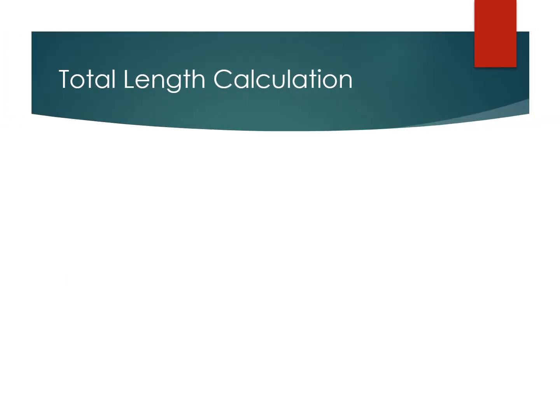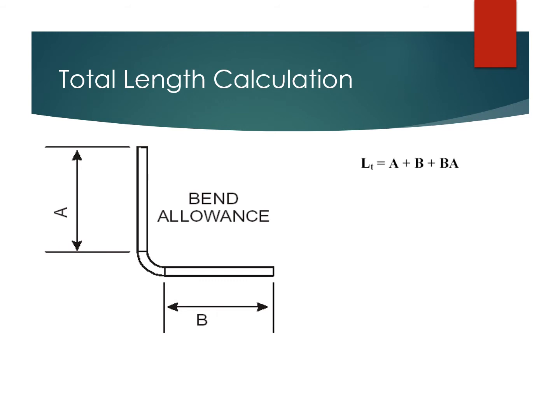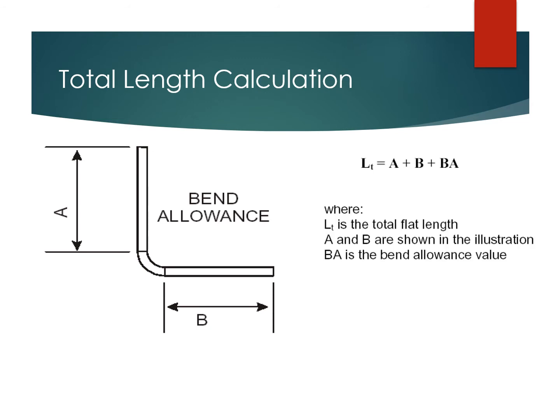For the total length calculation, we have an example of a simple sheet metal part having a bend. A is the vertical length and B is the horizontal length, and there is a bend allowance. The flat length formula is: LT (total flat length) = A + B + bend allowance. We will explain how the bend allowance value is derived and how to calculate these numbers.